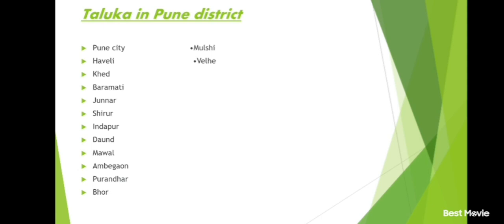Parbhani district and its talukas: Parbhani, Jintur, Gangakhed, Purna, Sailu, Pathri, Manwad, Palam and Sonpeth.